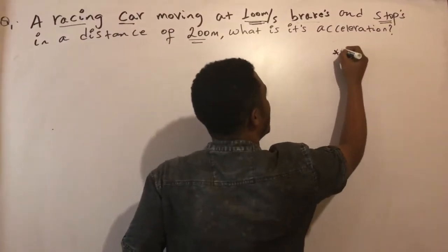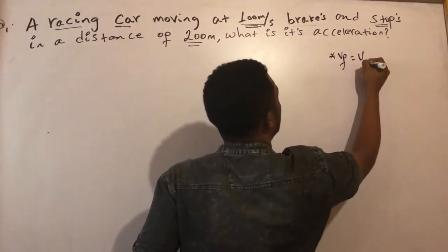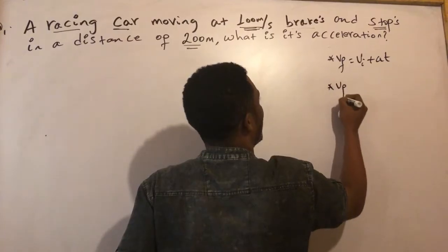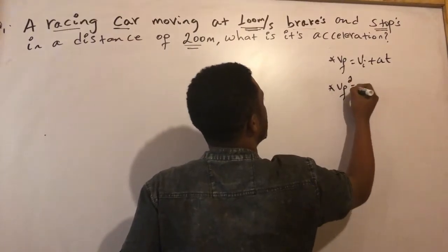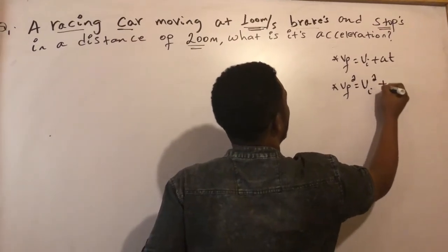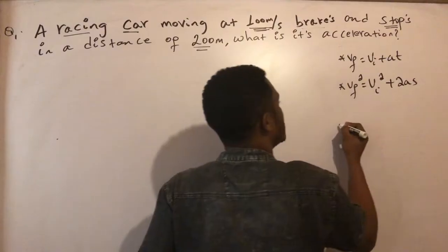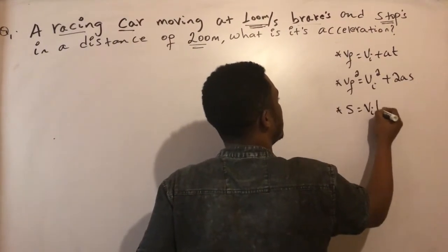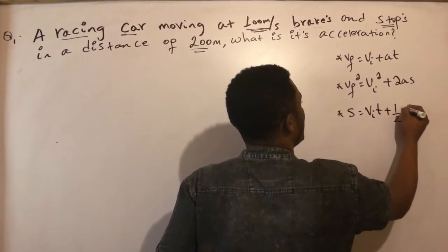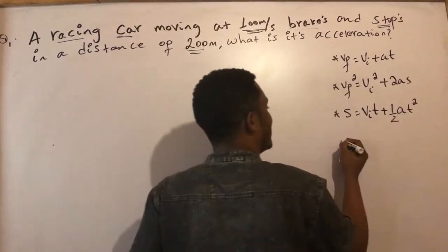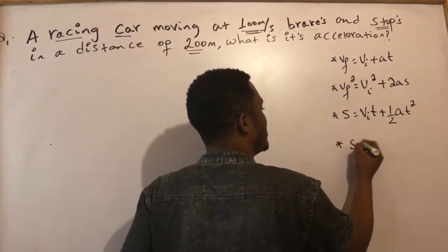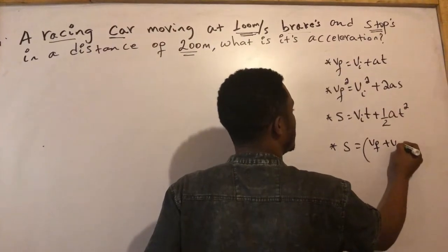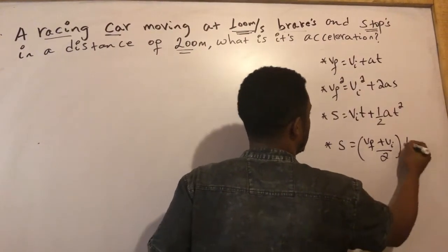V final squared equals V initial squared plus 2As. Also, distance is equal to V initial times T plus half A times T squared, and distance equals V final plus V initial divided by 2 times T.